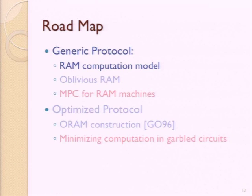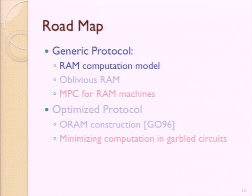Let's look at the RAM computational model. We can view RAM computation as execution of a sequence of instructions — think of a CPU where a series of instructions tells you what memory to fetch and what computation to execute. Each instruction is either a read or write of data from a particular memory address. After this read or write, you have a small computation called the getNext instruction, which both transforms your data and tells you what the next instruction to execute should be — whether a read or write, and at which memory location.